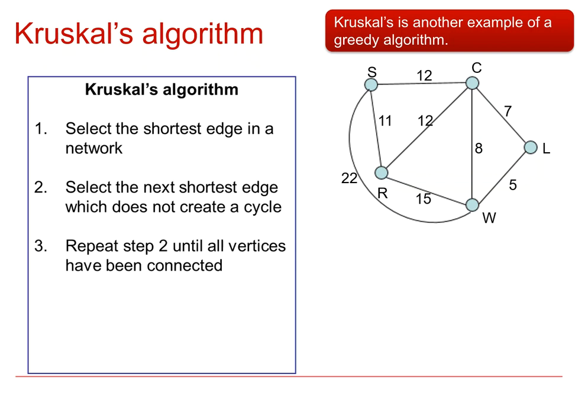So let's have a go at it. Select the shortest edge in the network. Right, and so if we have a look at all the arcs there, we can see the shortest one is this one. So let's mark that on there like that. And of course just like we did with Prims, we should keep a track of which arcs we've added and what their weight is and the order in which they're added. So we've got LW, that has a weight of 5.